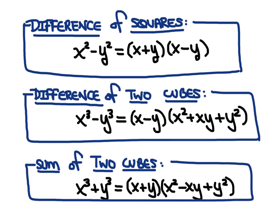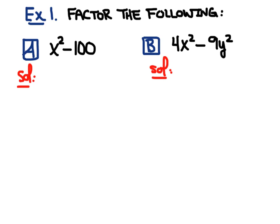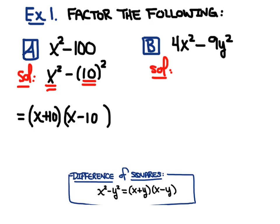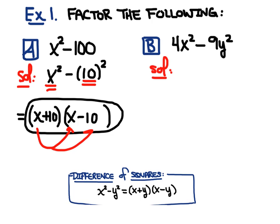Let's do a couple of examples to illustrate how this works. Part A: we have x squared minus 100. We notice that this has the form x squared minus 10 squared. Looking at our difference of squares equation — you'll see it at the bottom — this is your x and this is your y. So when we factor this, the expression equals x plus 10 times x minus 10. You can always check your answer by distributing back out using the distributive property, and you'll see that you get x squared minus 100.